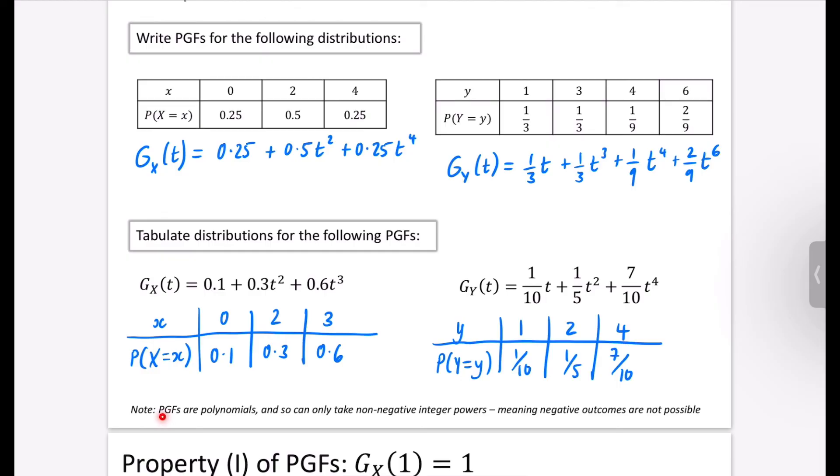And I've said that at the bottom, we're going to note PGFs are polynomials, and so they only take on non-negative integer powers. So all of the outcomes always have to be 0 or greater and integers. So what I've said, negative outcomes are not possible.